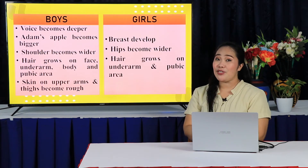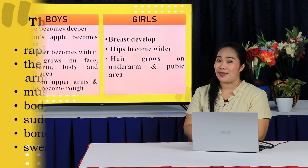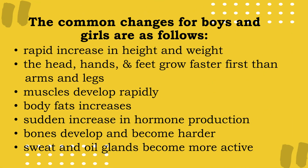The common changes for both boys and girls are as follows: rapid increase in height and weight; the head, hands, and feet grow faster first than arms and legs; muscles rapidly develop; body fat increases; sudden increase in hormone production; bones develop and become harder; and sweat and oil glands become more active.